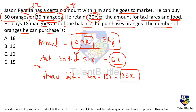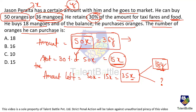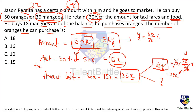He bought 18 mangoes at Y rupees each, spending 18Y rupees. Since 50X = 36Y, we get Y = 50X/36. So 18Y = 18 × (50/36)X = 25X. He spent 25X on mangoes, and had 35X left, so the remaining amount is 35X − 25X = 10X rupees.